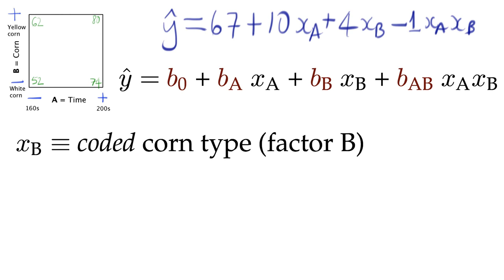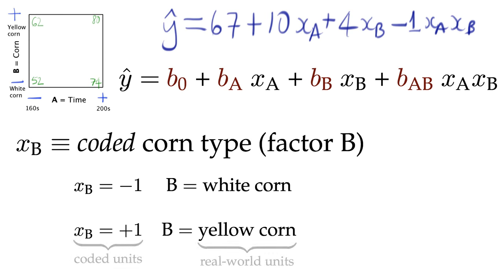Similarly for xB, it is coded so that minus 1 represents white corn, and plus 1 represents yellow corn. Similar to the xA case, minus 1 and plus 1 are the coded units, while white corn and yellow corn are the real-world units. Recall that with categorical variables, we assign the minus 1 and plus 1 arbitrarily. The sign of the coded units will not change the model's interpretation.